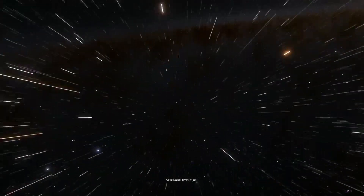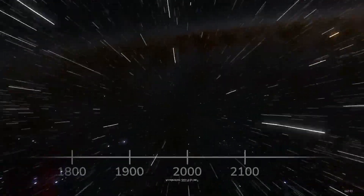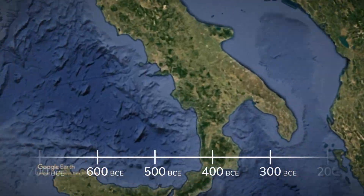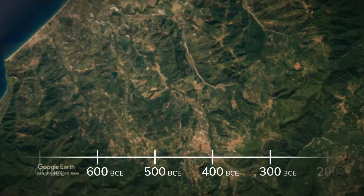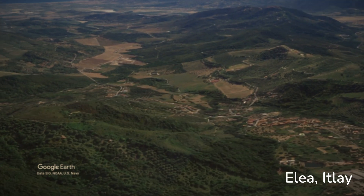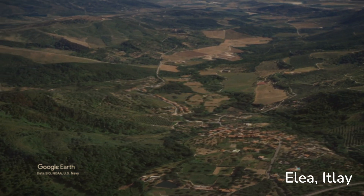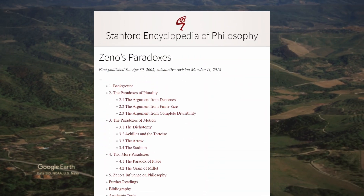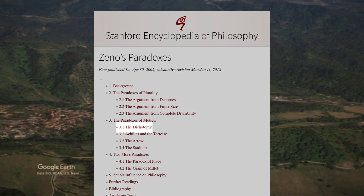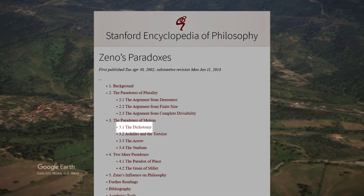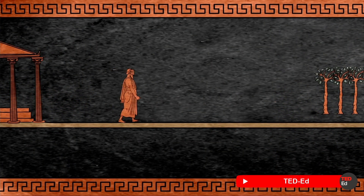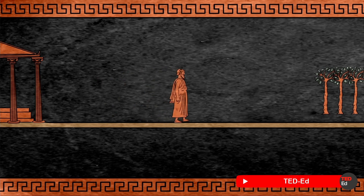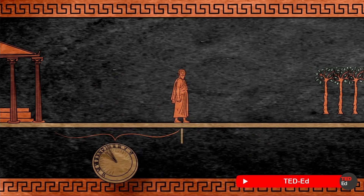To truly understand our understanding of infinity, we will need to go back in time. Five centuries before Common Era, Greek philosopher Zeno of Ilya devised paradoxes concerned with time and the infinite. The dichotomy paradox states that which is in locomotion must arrive at the halfway stage before it arrives at its goal.